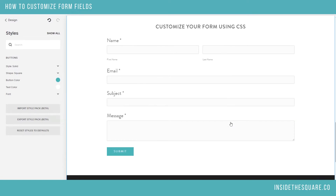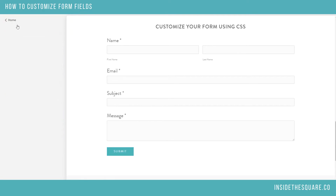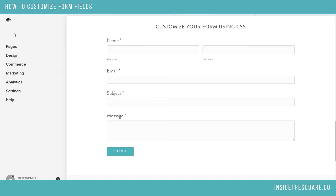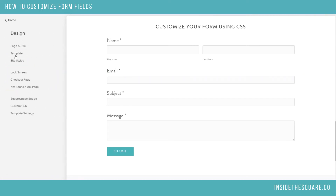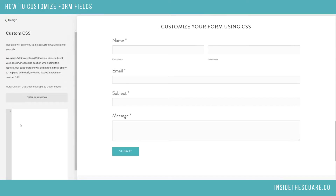We're not able to change these other fields in the site styles editor — that's what we're going to do using CSS. I'm going to back out of this menu and show you how we reach CSS. Again, we're going into Design and then down to Custom CSS. Now, the two codes beneath the video — let's start with the first one and then we'll break it down so you can see exactly what it's doing.